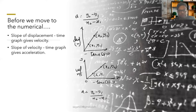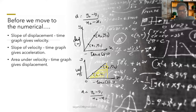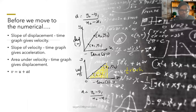Also, the area under the velocity-time graph gives you displacement. For example, if the area under the graph forms a triangle, then displacement equals half times base times height. Now, the three equations of motion: the first is v = u + at.